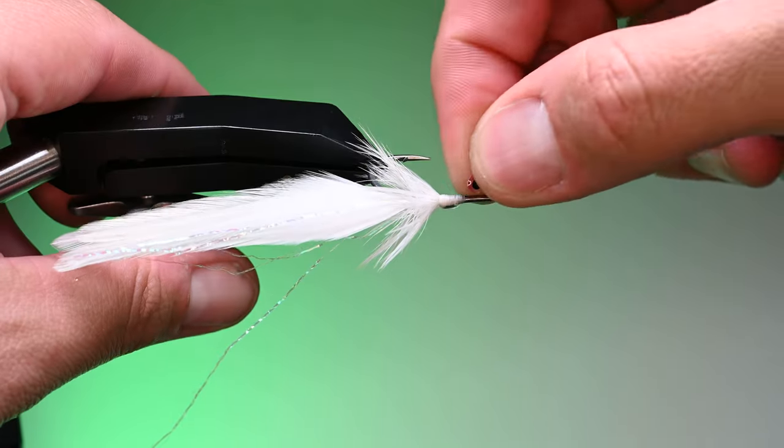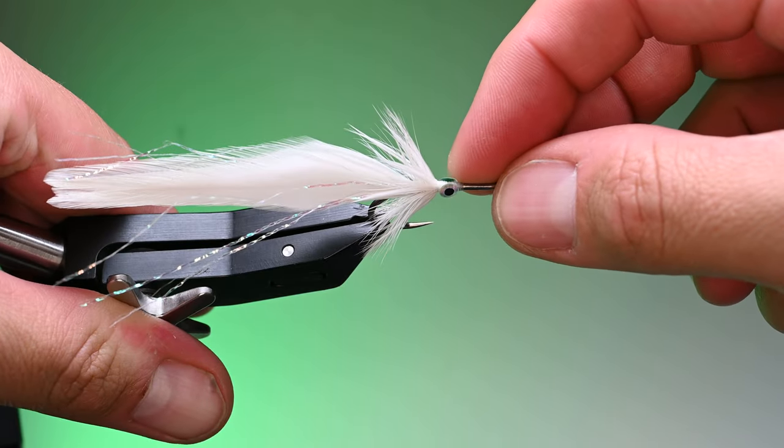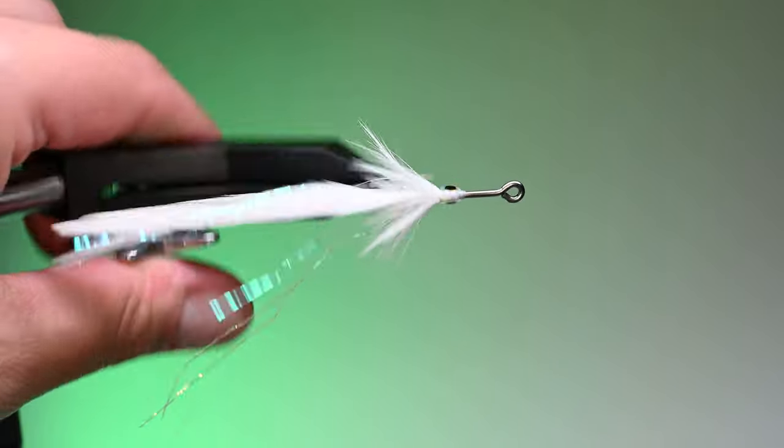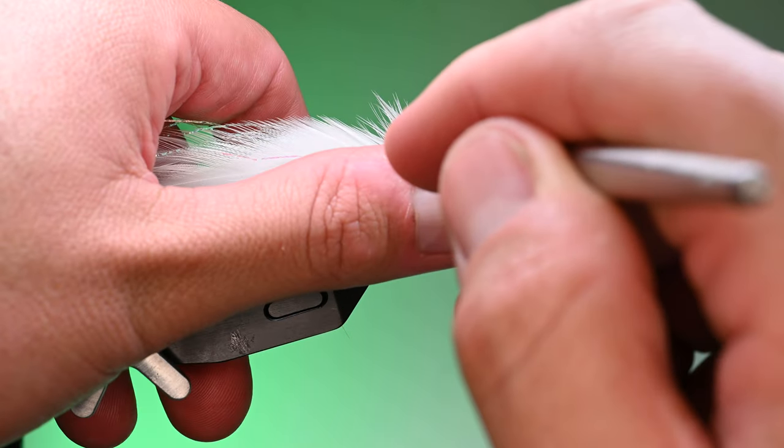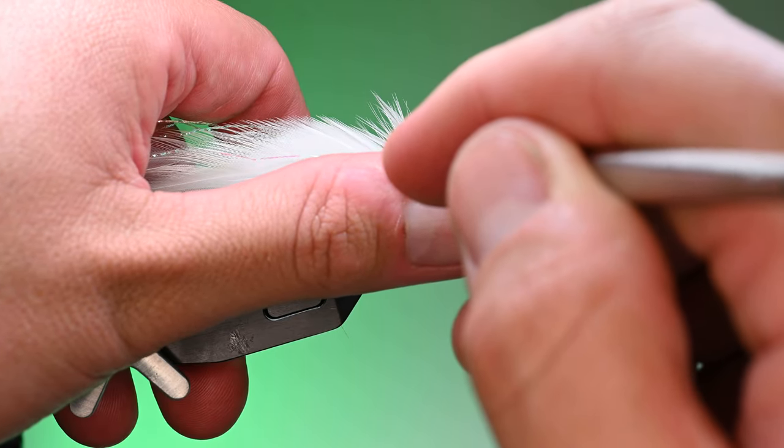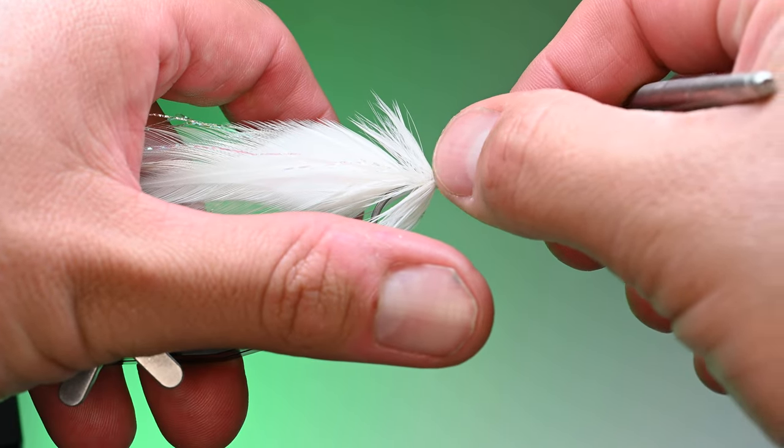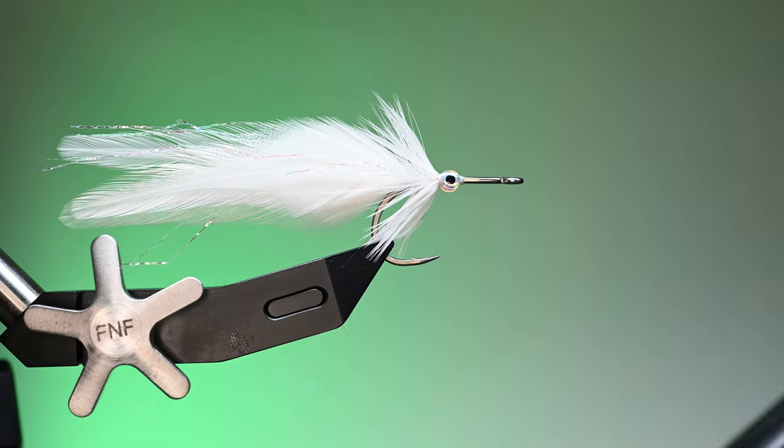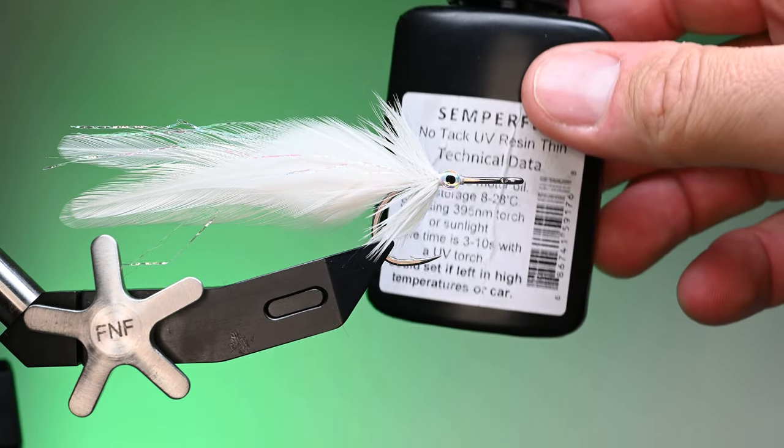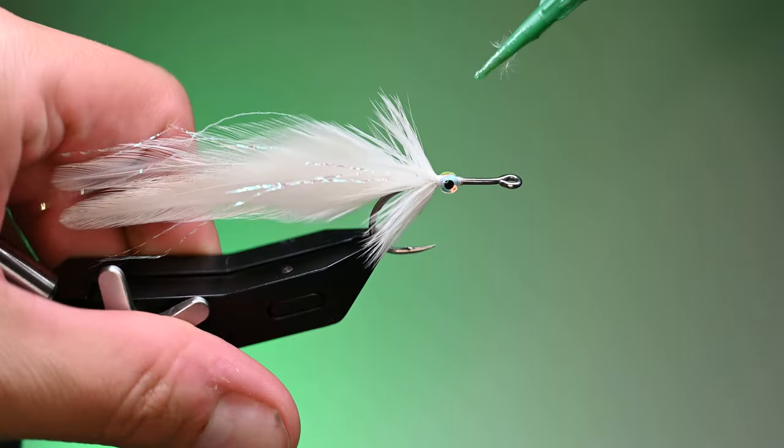I believe this fly is directly used for snook and that's what my buddy's going for, so hopefully this will be a fish slayer for him. We're going to go ahead and position these eyes and get them prepped so that they're on each side and then we will of course have our UV resin handy. If you've got smaller fingers it's easier. I like to use my bodkin to assist me in positioning those eyes.